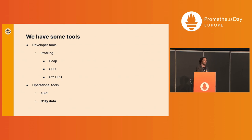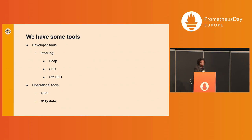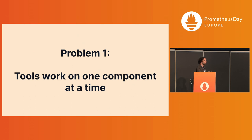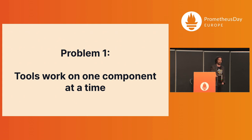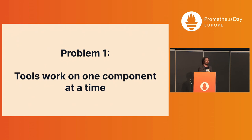In the developer world, we have profiles — whether they be heap profiles or CPU profiles. In terms of operational systems, we have tools like eBPF or observability data. But the problem with all of these tools is that they work on one component at a time, and that doesn't work well in the cloud-native environment where you have a lot of microservices working together. Often performance problems actually arise in the interaction between components, and you will never see this if you look at one component at a time.